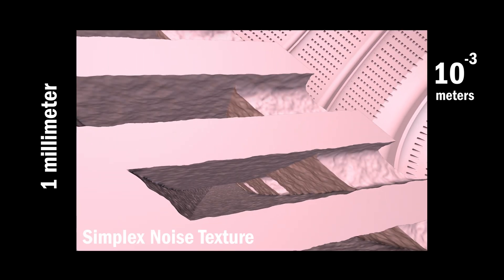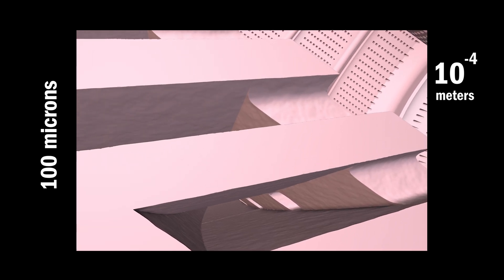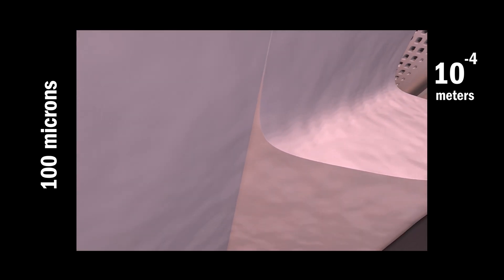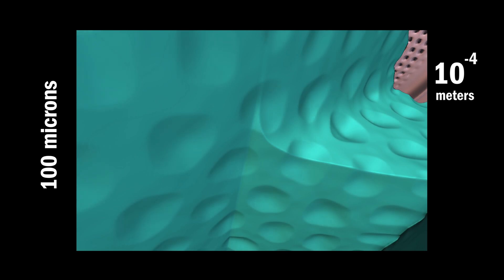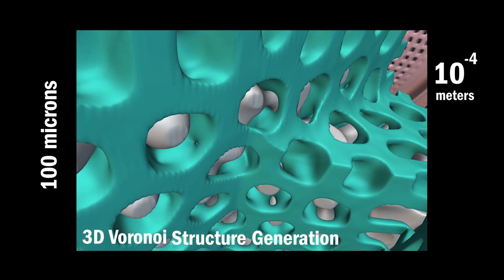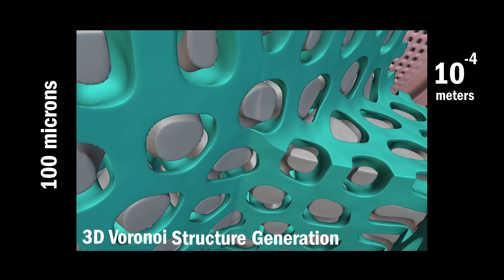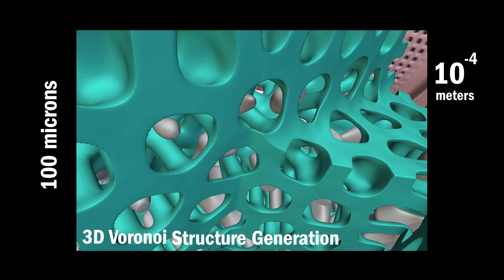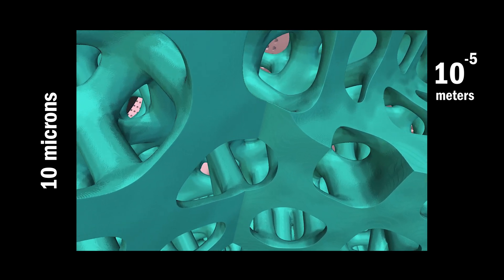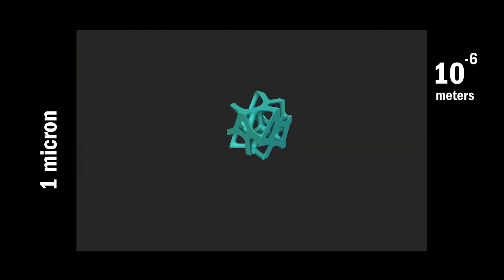At 1 millimeter, we see the inside of a cooling channel. At this scale, texturing is applied for more effective heat transfer. Zooming in further to 10 to the negative fourth meters, or 100 microns, we model the crystal structure of 3D printed Inconel using a 3D cell packing, or Voronoi algorithm. At 10 to the negative 6 meters, or 1 micron, we reach the definition of 1 unit cell.